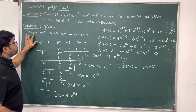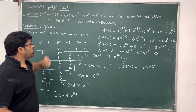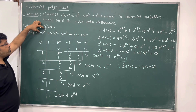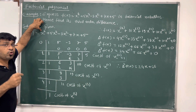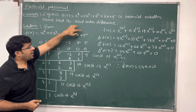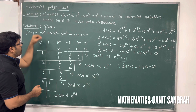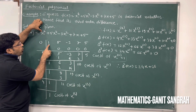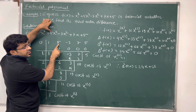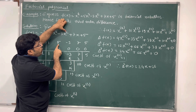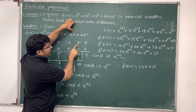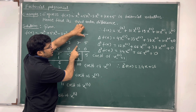First we write down the given f(x) as it is. This is a fourth degree polynomial. We write down the coefficients of x to the power 4, x cubed, x squared, x, and the constant term. The coefficient of x to the power 4 is 1, coefficient of x cubed is 5, coefficient of x squared is minus 3, coefficient of x is 7, and the constant is 5.